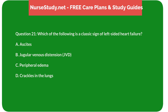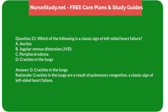Question 21: Which of the following is a classic sign of left-sided heart failure? A) Ascites, B) Jugular venous distension (JVD), C) Peripheral edema, D) Crackles in the lungs. Answer: D, Crackles in the lungs. Rationale: Crackles in the lungs are a result of pulmonary congestion, a classic sign of left-sided heart failure.